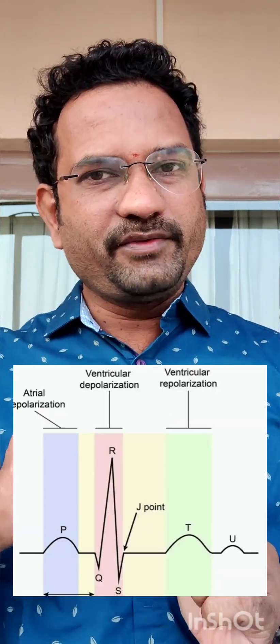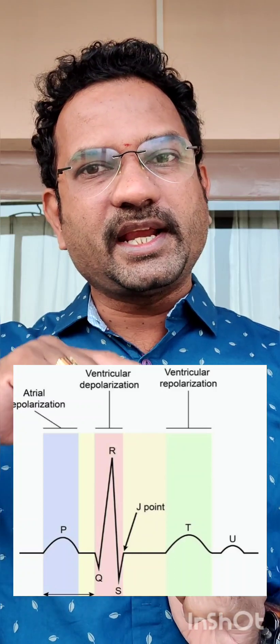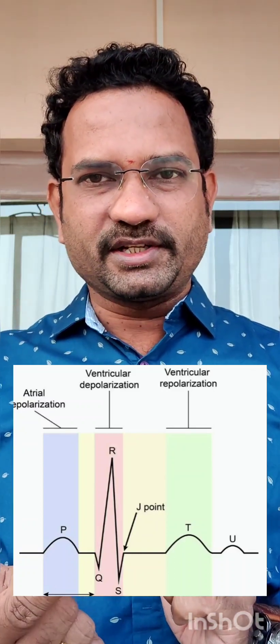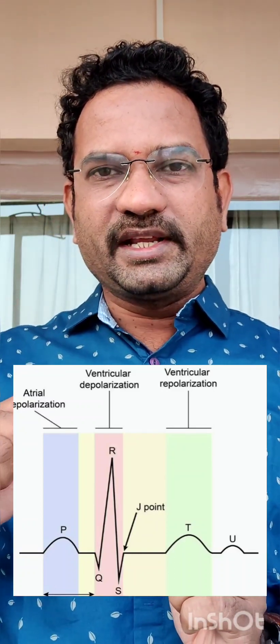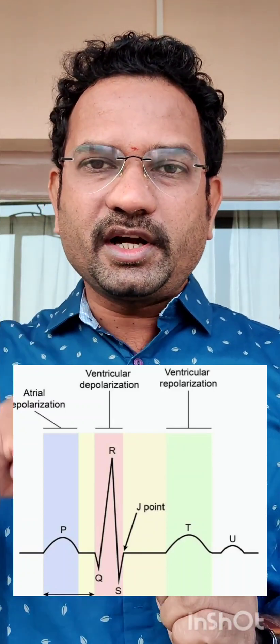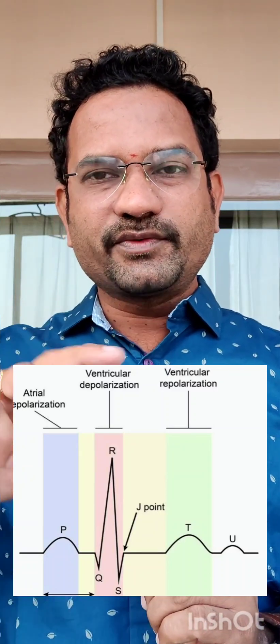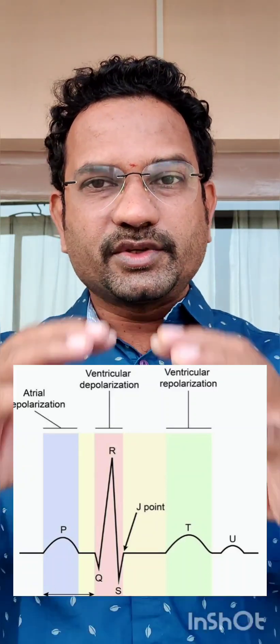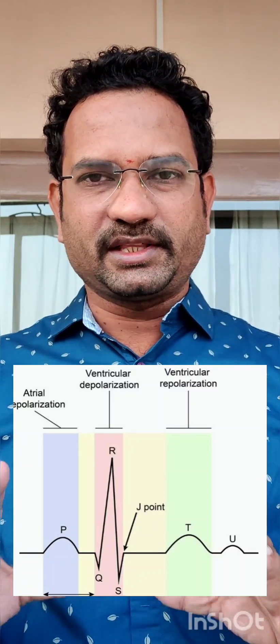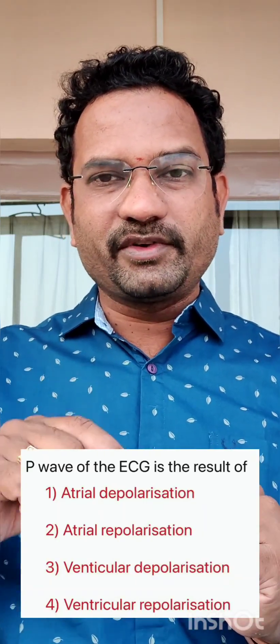The T wave indicates ventricular repolarization. Atrial repolarization is also present, but it is masked by the large QRS complex. So the summary is: P wave indicates atrial depolarization, QRS wave indicates ventricular depolarization, and T wave indicates ventricular repolarization. The answer to the question — what does the P wave represent — is atrial depolarization.